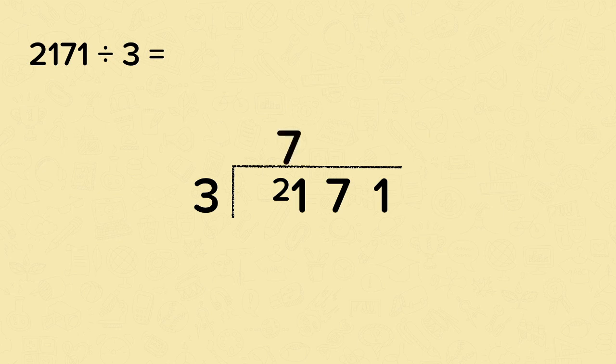Now onto the next digit. Seven divided by three, that's two, remainder one. These remainders move into the ones. Now we've got eleven ones. Eleven divided by three, that's three, remainder two.